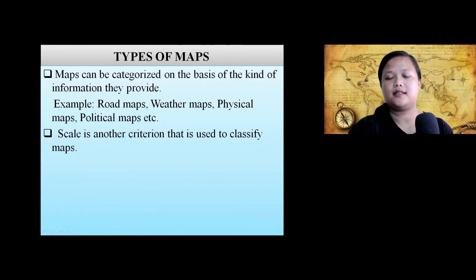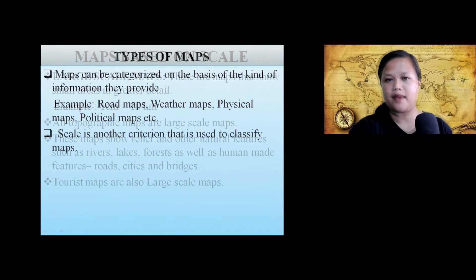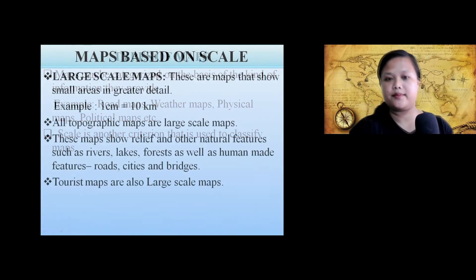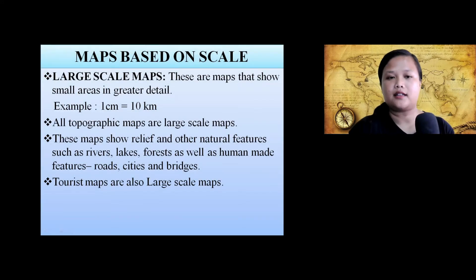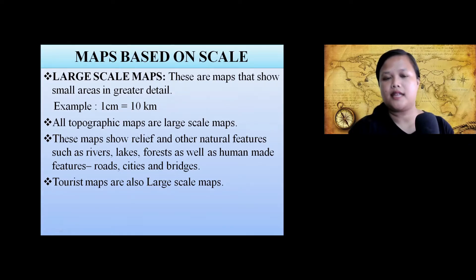Scale is another criterion used to classify maps. Maps based on scale: large scale maps. These are maps that show a small area in greater detail. For example, one centimeter on a map represents 10 kilometers on the ground. All topographic maps are large scale maps.